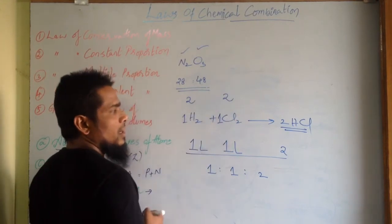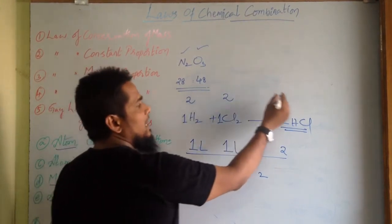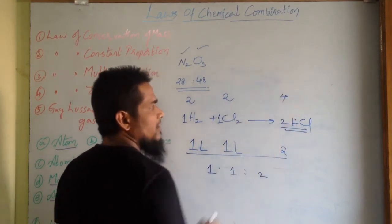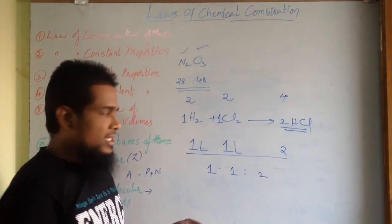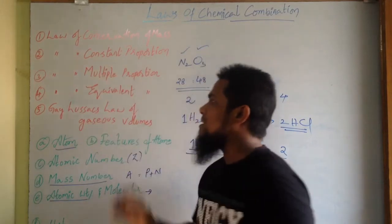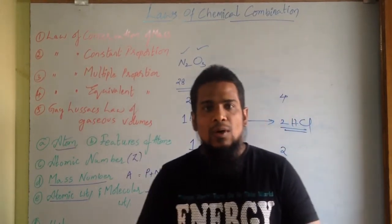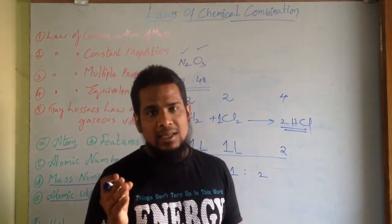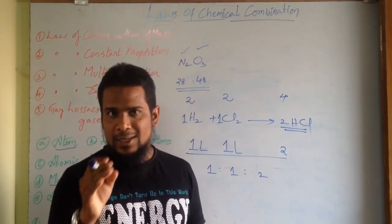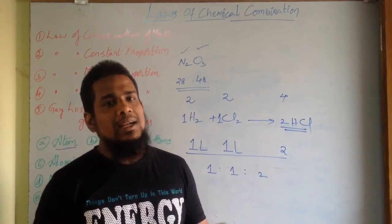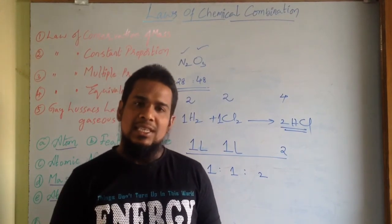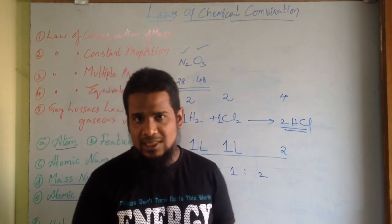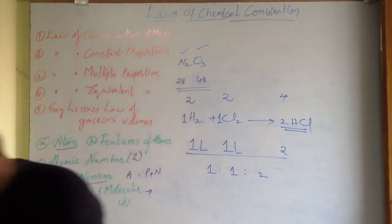For example, if we take two liters of hydrogen with two liters of chlorine, then four liters of HCl will be formed. This is Gay-Lussac's law for gaseous volumes. Hope you liked my video — if you have any queries, put them in the comment box, subscribe, and share this video with your friends. Thanks for watching!